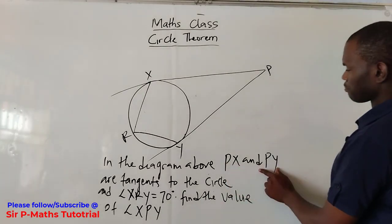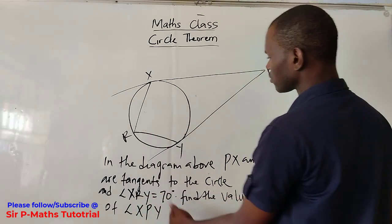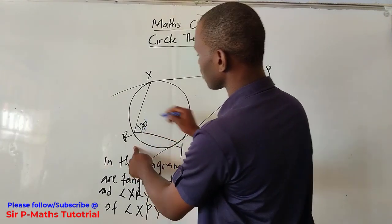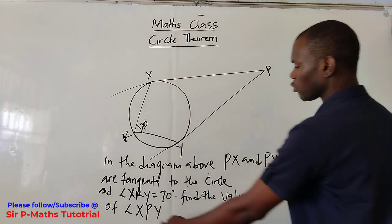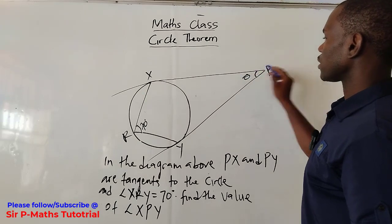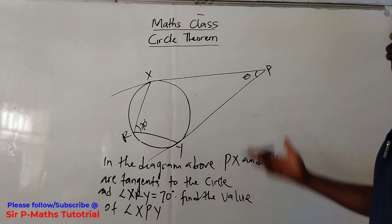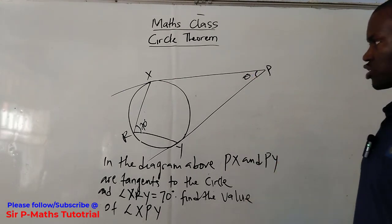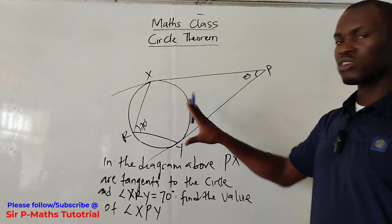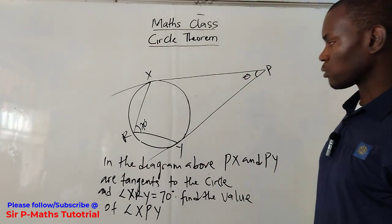Welcome back. We have another circle theorem problem on the board. PX and PY are tangents to the circle, and angle XRY is 70 degrees. We are asked to find the value of angle XPY — let's call it theta. To simplify, we'll make a construction, because with only 70 degrees no direct trace gives us the angle we are looking for.